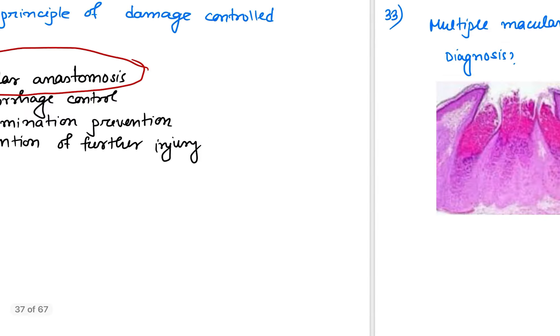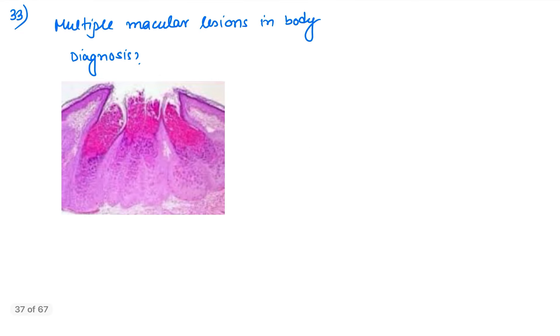Next, question number 33: multiple macular lesions in the body, and one image was given. It is nothing but an image of HP bodies, also known as Henderson-Peterson bodies. HP bodies are suggestive of a diagnosis of molluscum contagiosum, so the answer is molluscum contagiosum.